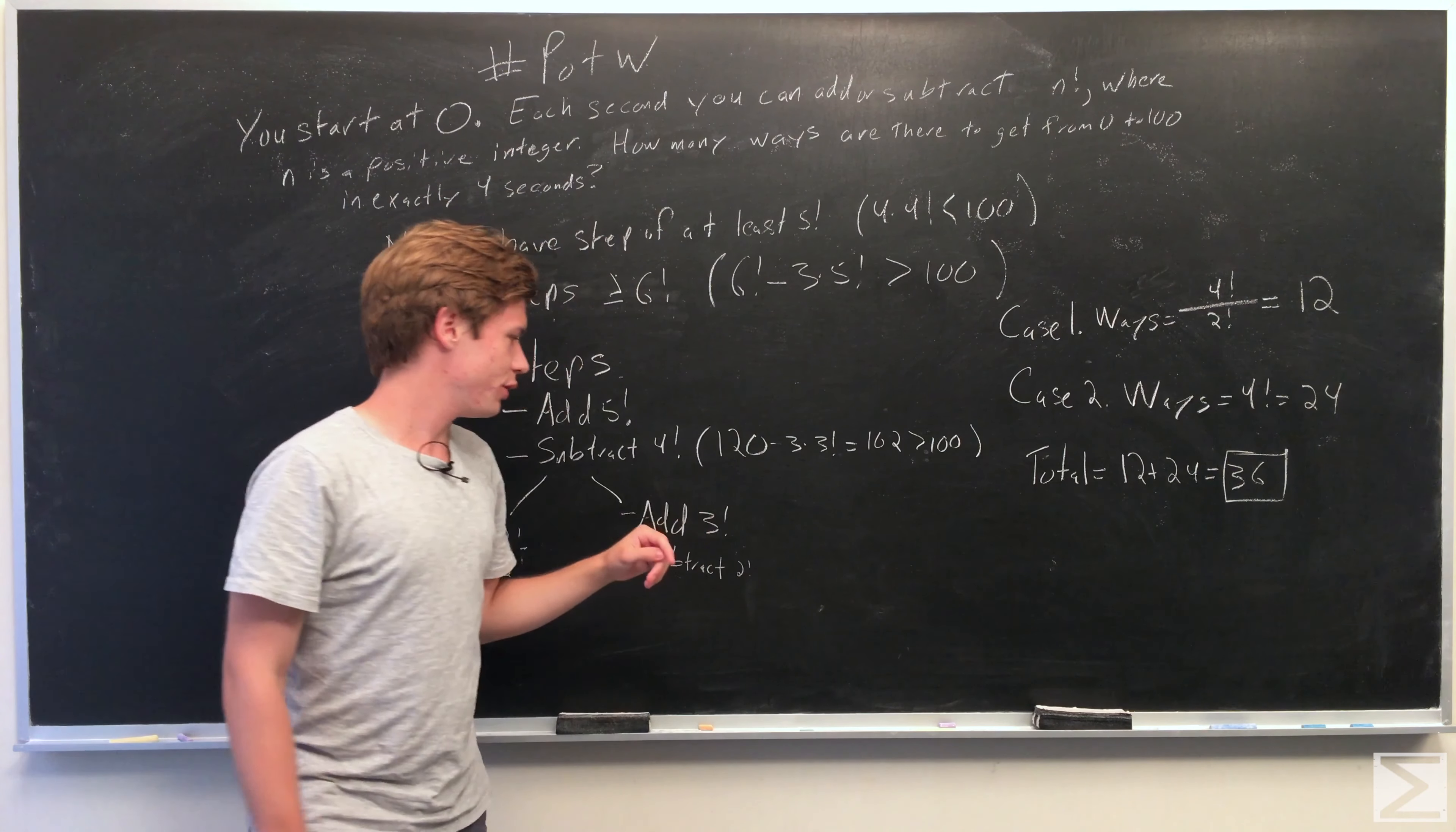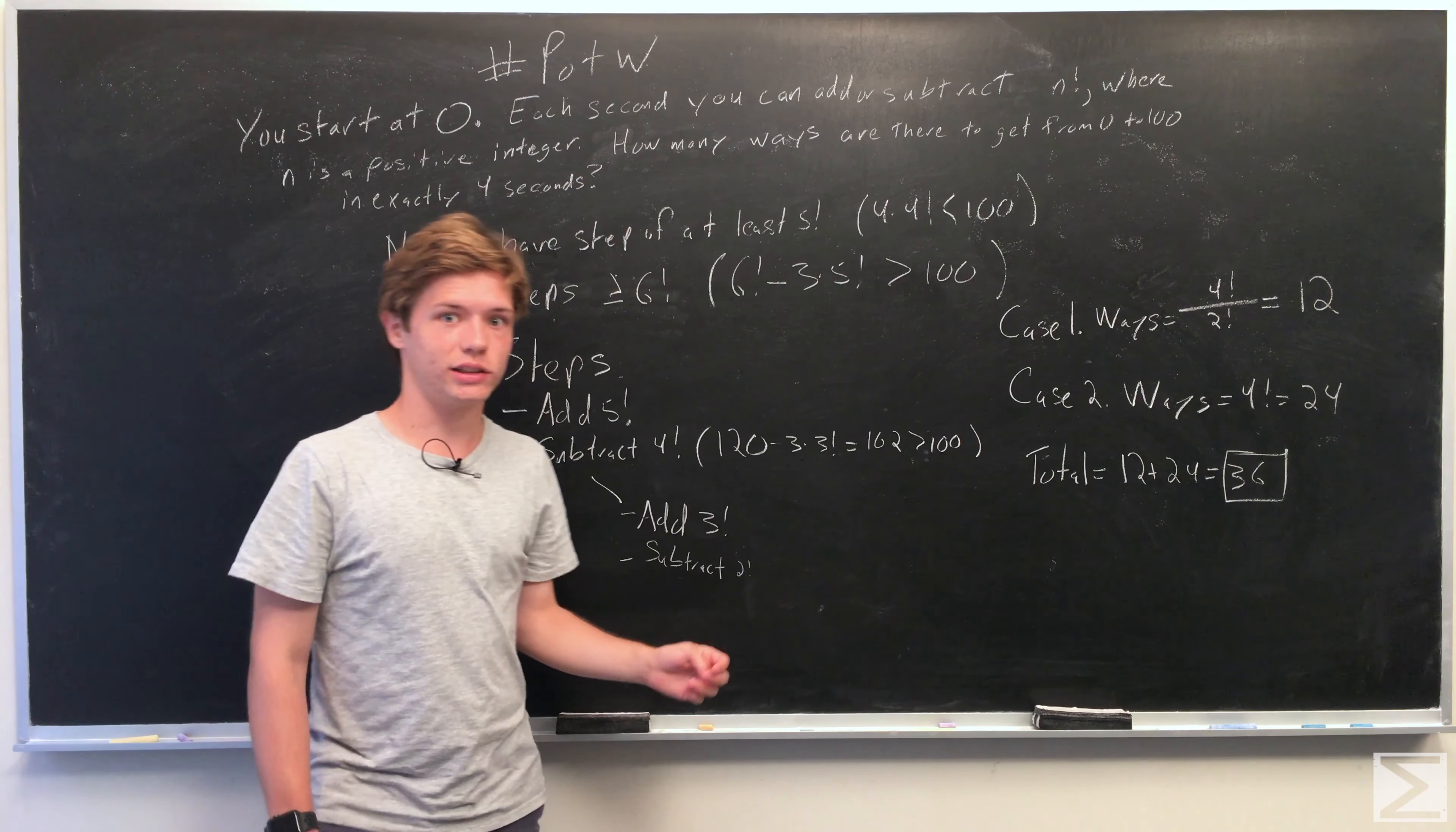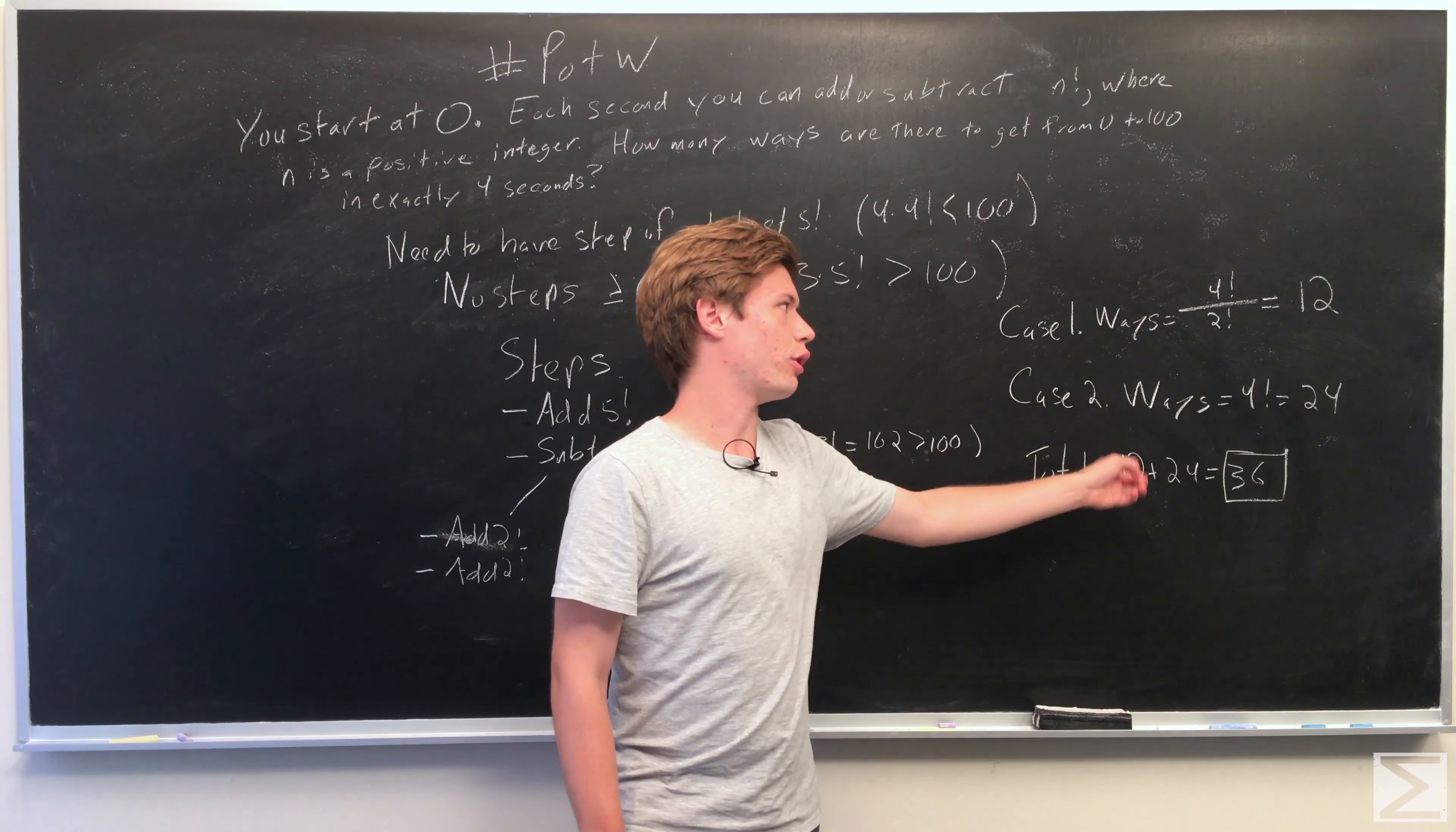And then case number 2, again we have 4 possible steps, and they're all distinct, so we just say that the number of ways equals 4 factorial, which is 24.